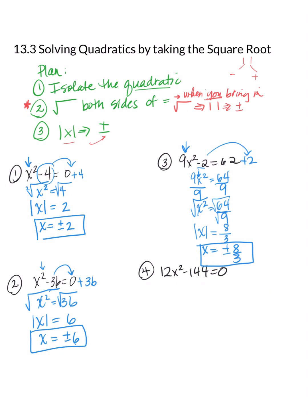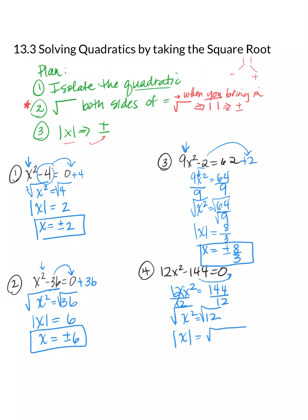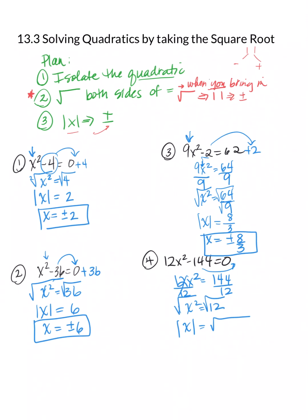Number four: 12x squared minus 144. Move 144 over — 12x squared equals 144. Divide by 12, giving x squared equals 12. Bring in the square root. The square root of 12 is not a perfect square — it's 4 times 3, so a 2 can come out. We get absolute value of x equals 2 square roots of 3. Get rid of the absolute value bars using plus or minus, so x equals plus or minus 2√3.